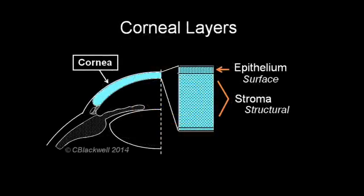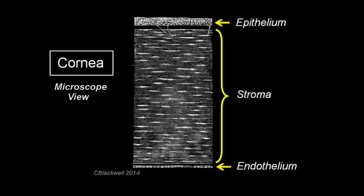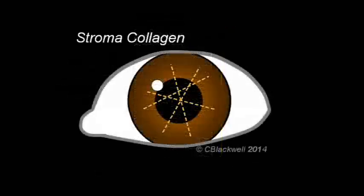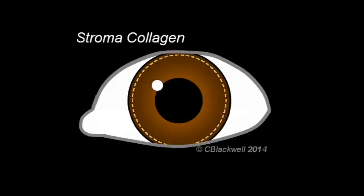Beneath the epithelium is the stroma. The structure and strength of the cornea is based on layers of collagen fibers that make up the stroma. In the center, the fibers are oriented in different directions in different layers, while around the edge they run circumferentially.